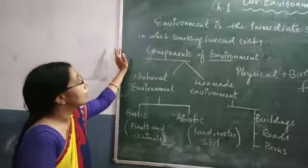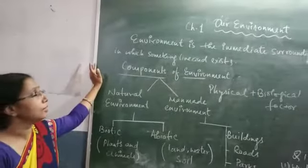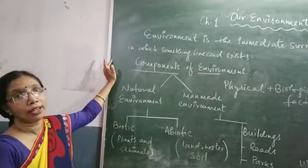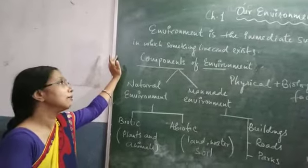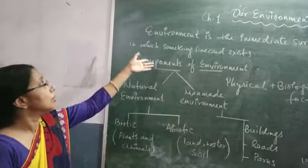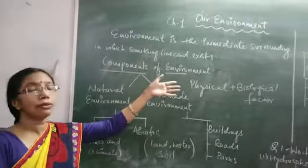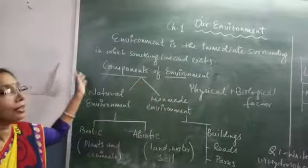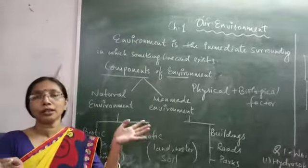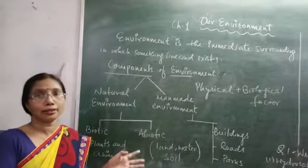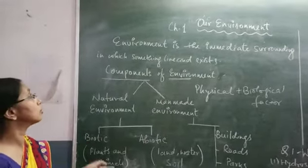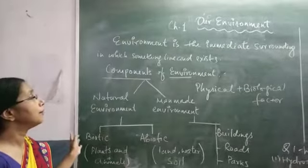Chapter 1 is about our environment. First, let us understand what we mean by environment. Environment is the related surrounding in which something lives or exists. The surroundings in which all living things live and exist is what we call the environment.